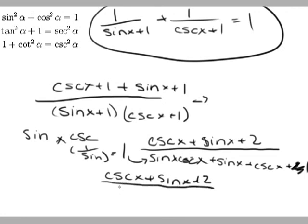all over sine x plus cosecant x plus 2, which these two things are the same, which makes this 1. Hope that helped you out.